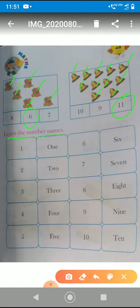Okay, now we will see the number names. The first one is what? Number one. So, one, O-N-E is one. Okay, next, two. T-W-O is two.